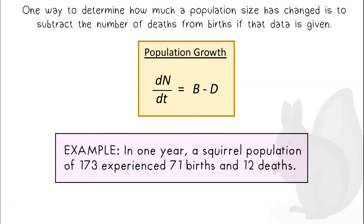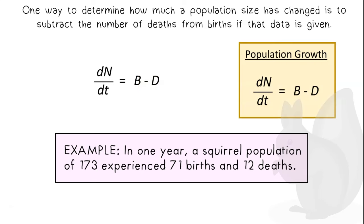For example, in one year, a squirrel population of 173 experienced 71 births and 12 deaths. dN over dt, or the amount of change in that given period of time, is 59, for a new population of 232 squirrels.